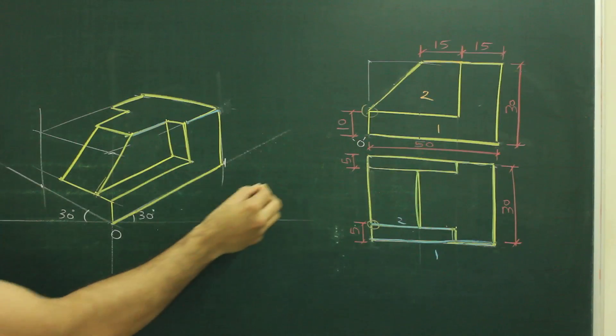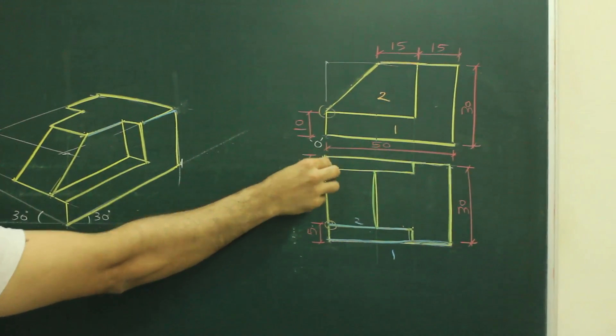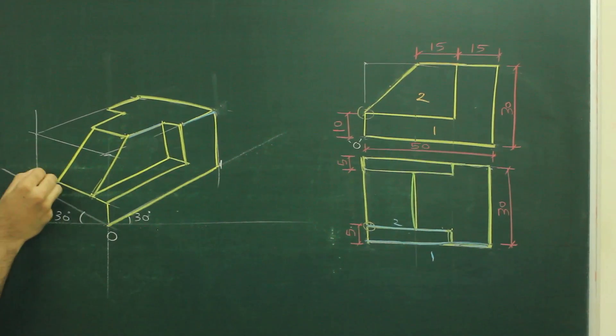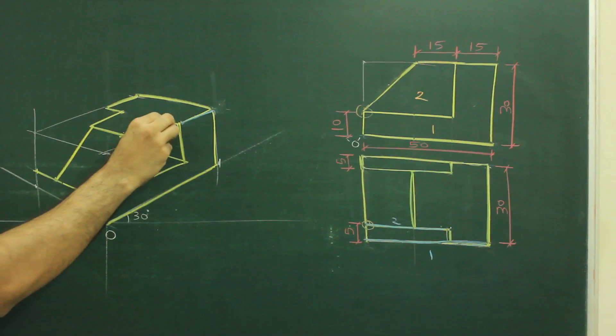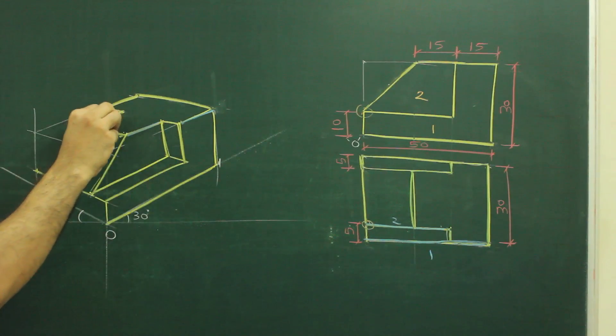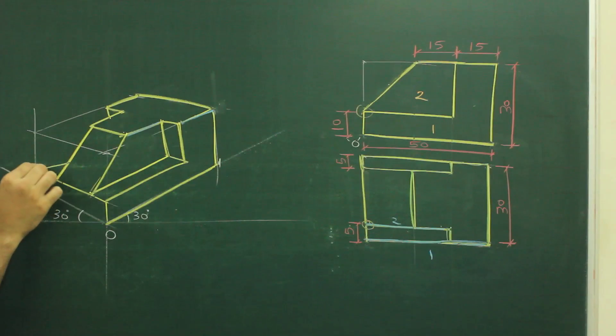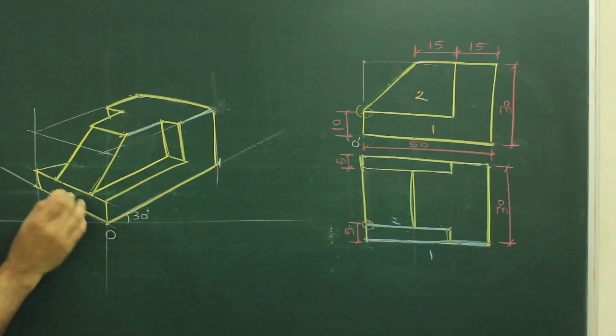Same way, if you see this behind part, which is full, that I can draw it over here. And whatever is there in the front, the same thing is behind. With that same logic, I can draw a line over here also. And parallel to this, over here also. And this is the remaining part.